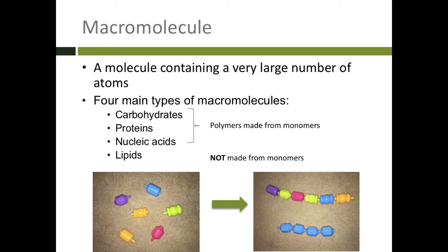The polymers can either be made of lots of different subunits, as in the polymer on the top with different colors of pop beads, or they can be repeating subunits. So three of our four types of macromolecules are made from monomers. Lipids are not made from repeating small subunits.